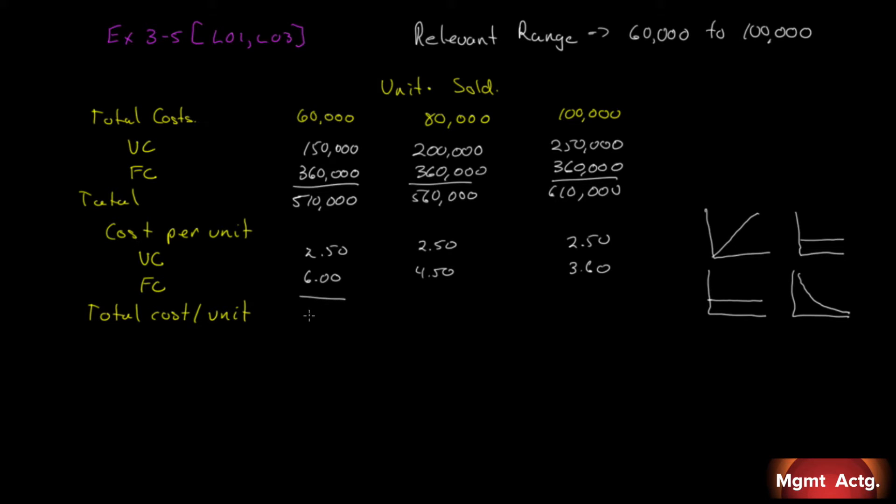360,000 divided by 80,000 is now 450 and 360 divided by 100,000 is only 360. So our total cost per unit 850 here, $7 here, $6 and 10 cents. So there you go. There's number one done. So what looked like a challenging question really wasn't that challenging when we understood that fixed costs are the same right across, variable costs are the same right across and the rest is just addition, division, multiplication. That's it.